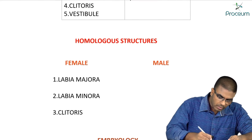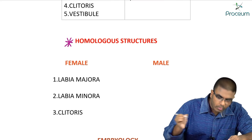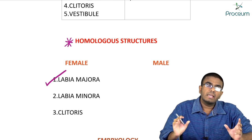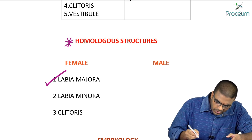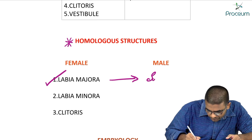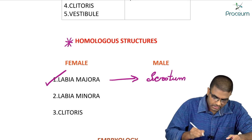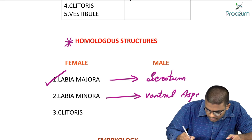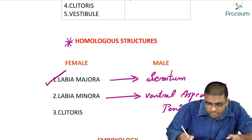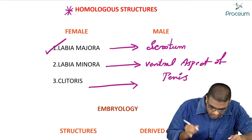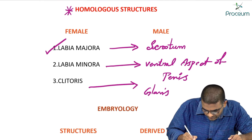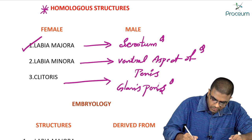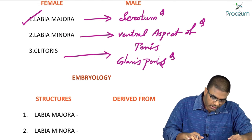Homologous structures are similar structures in their counterparts. Labia majora in a female is homologous to the scrotum in males. Labia minora is homologous to the ventral aspect of the penis or penile urethra. Clitoris is homologous to the glans penis. These are very important MCQ questions for board exams.